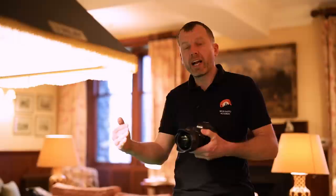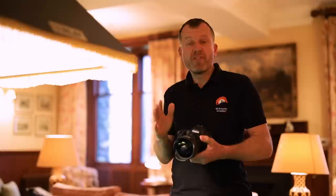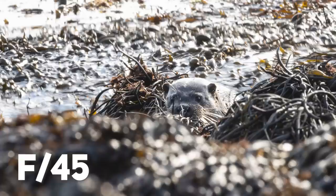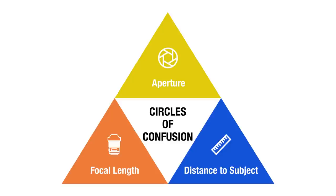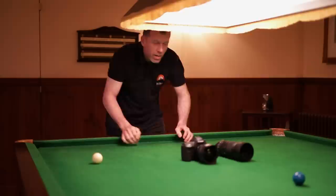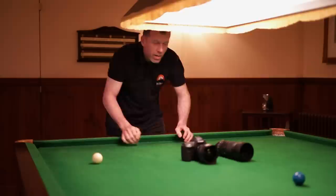It is important to understand that our distance to our subject and our focal length also affect depth of field. If we understand this, we'll realise why, if using a long lens focused on something quite close, we're never going to be able to get a deep depth of field. Or, on the other end of the scale, if we use a very wide angle lens focused a long way into the distance, we can never get a shallow depth of field. Both of these scenarios are impossible because two of the three influences of depth of field are working against you.